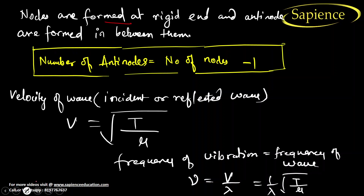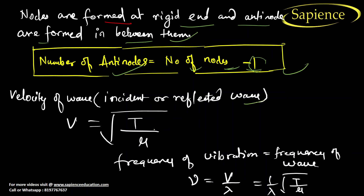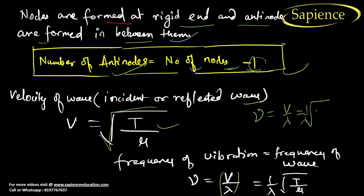Nodes are formed at rigid ends and anti-nodes are formed between them. The number of anti-nodes equals the number of nodes minus one — this relation is very important. The velocity of the incident or reflected wave is root under T by mu, and the frequency of vibration equals velocity divided by lambda, giving: frequency = (1/lambda) × root(T/mu).